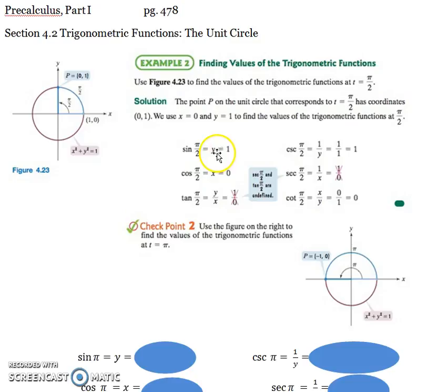So for each of these, their reciprocals are going to be the cosecant, would be the reciprocal of sine. So 1 over 1 is still 1. Secant is the reciprocal of cosine, so 1 over 0, again, does not exist, undefined.